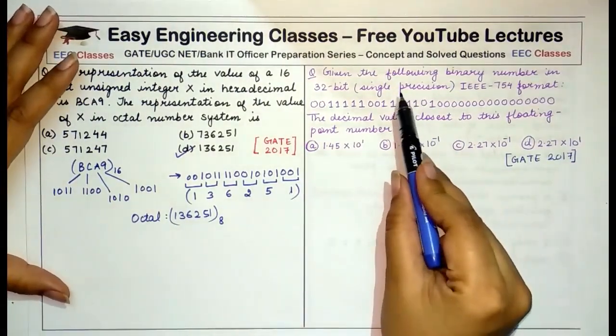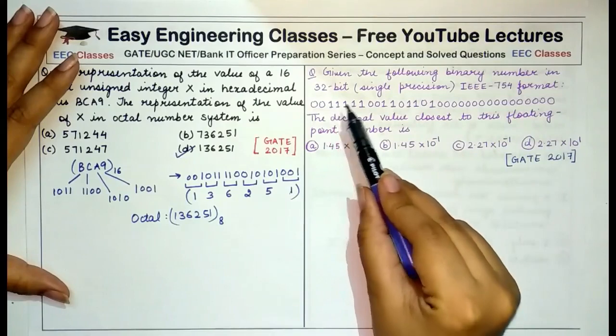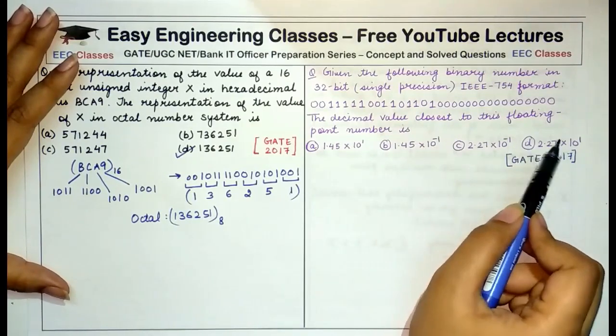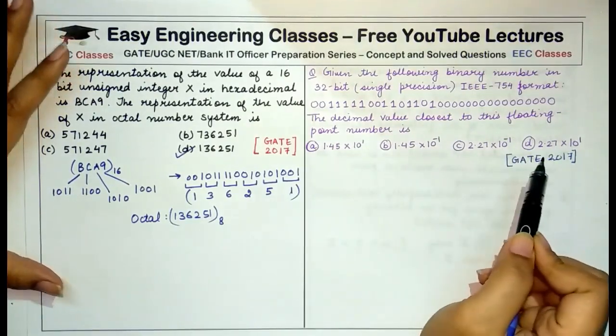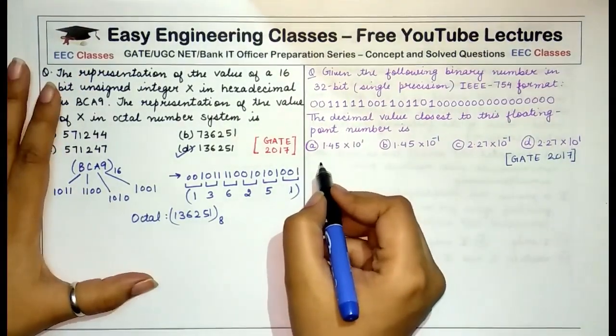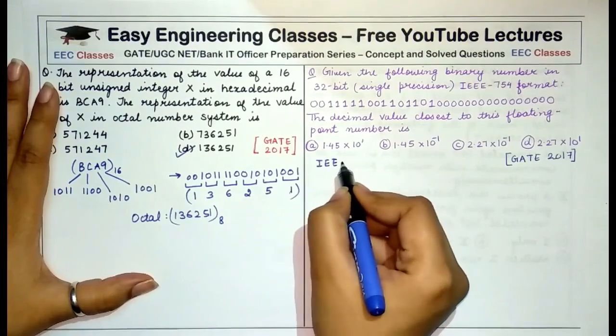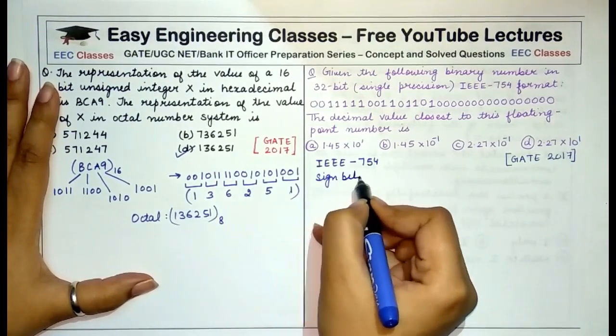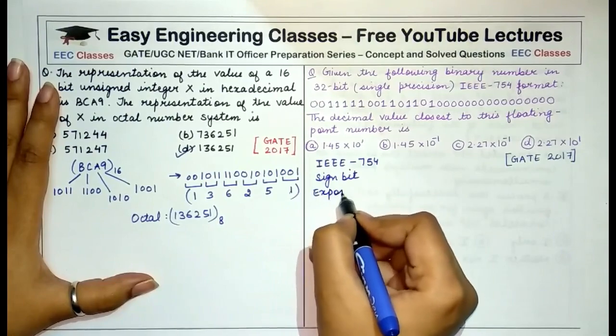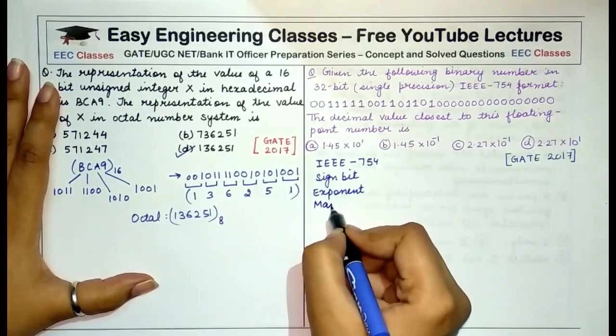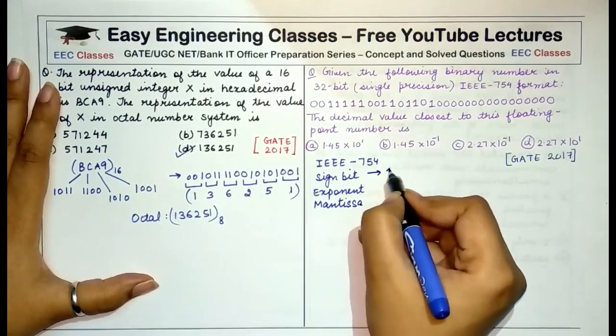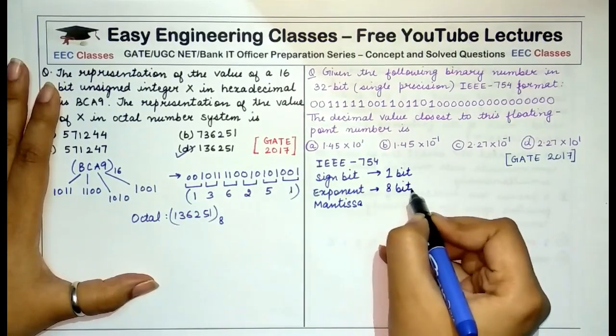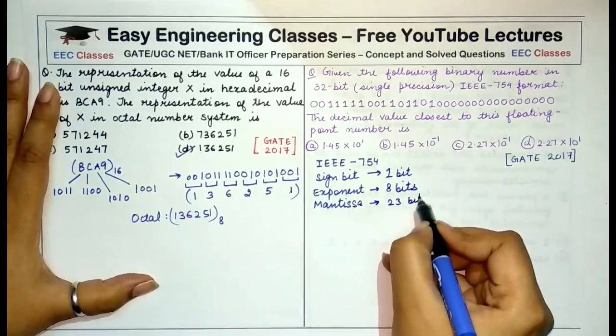Now coming to the next question. The question states that the given binary number is in 32-bit IEEE 754 format. The decimal value closest to this floating point number is given in the options. Now you have to remember that in IEEE 754 format the number is divided into three parts: the first is sign bit, next is exponent, and the third is mantissa.